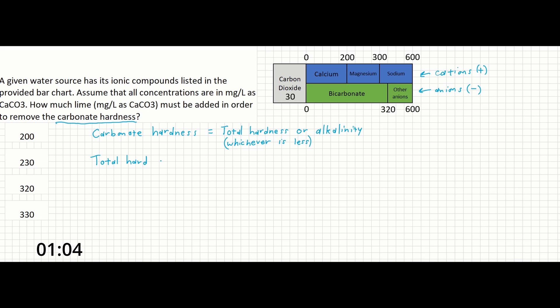The total hardness is going to be the sum of the calcium and magnesium. These are the only two cations that contribute to hardness.